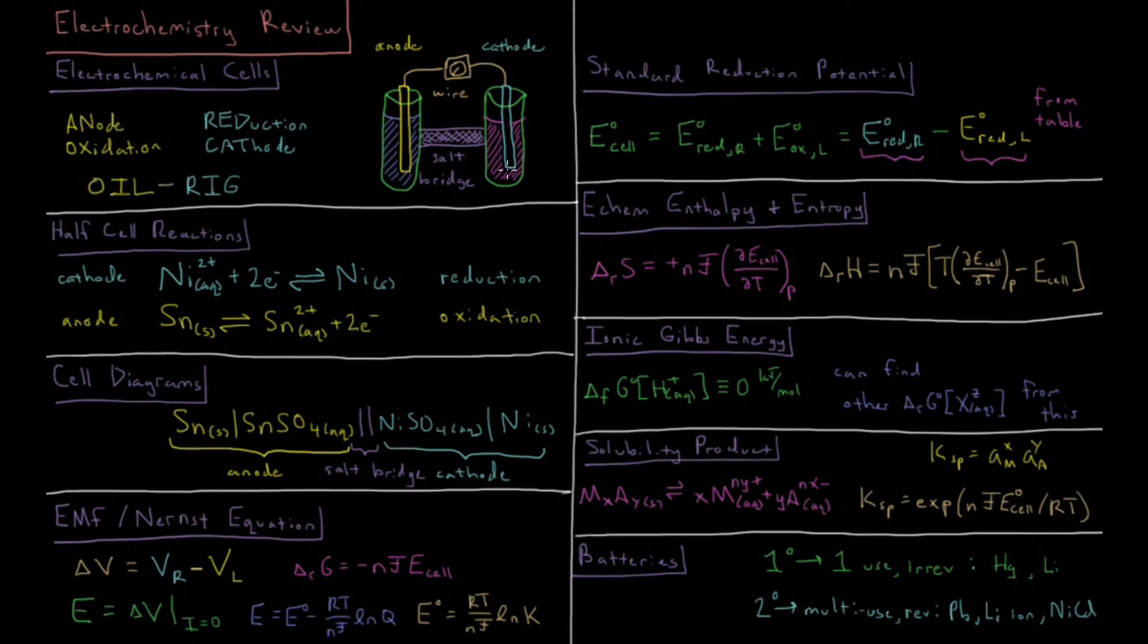We can build this electrochemical cell into a cell diagram, which is a shorthand representation of it. We have tin metal at our anode being oxidized to tin sulfate in aqueous solution, a double bar in the middle representing our salt bridge, and our cathode on the right where nickel sulfate ions are reduced to form nickel metal.